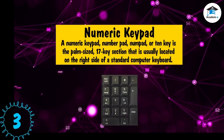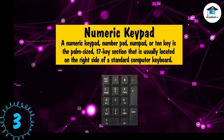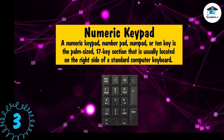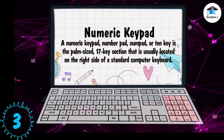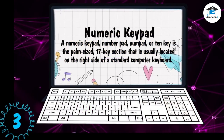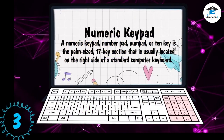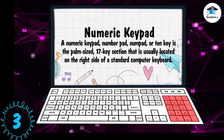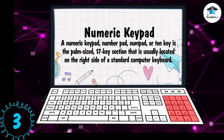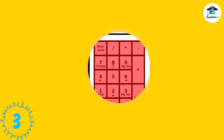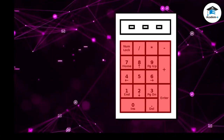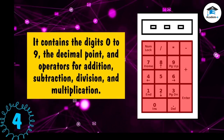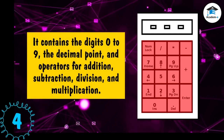A numeric keypad, number pad, numpad, or 10-key is the palm-sized 17-key section that is usually located on the right side of a standard computer keyboard. It contains the digits 0 to 9, the decimal point, and operators for addition, subtraction, division, and multiplication.